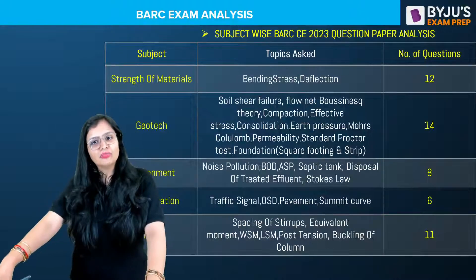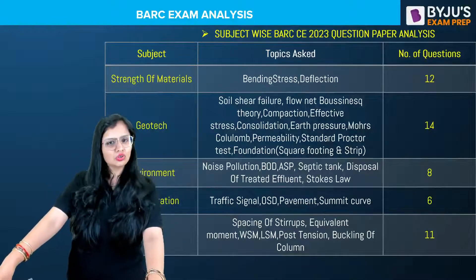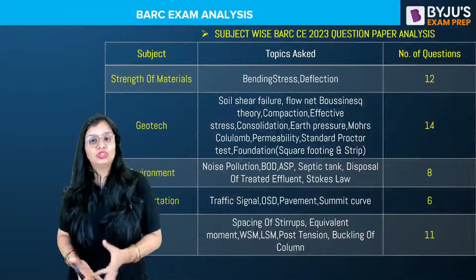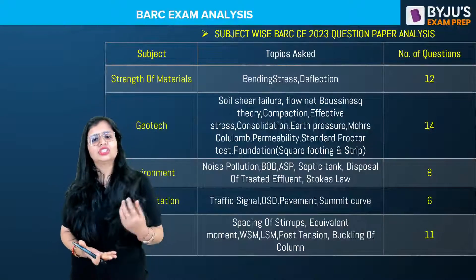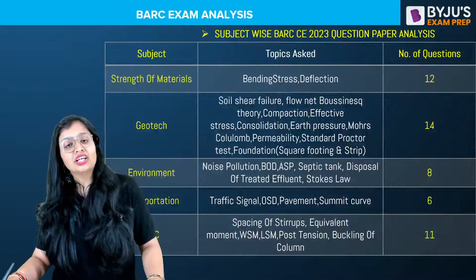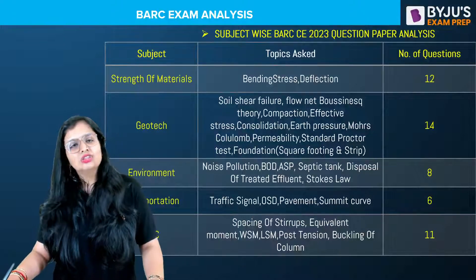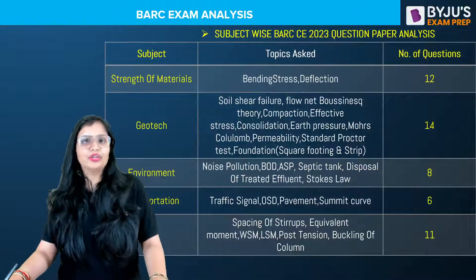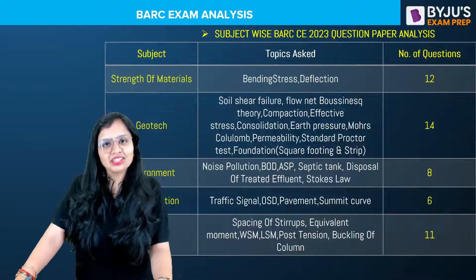For Strength of Materials, questions like bending stress and deflections were there. In Geotechnics, there were many questions like soil shear failure, flow net, compaction, effective stress, consolidation, and questions related to square footing and strip footing as well. Students are saying approximately 13 to 15 questions, with an average of about 14 questions from Geotech.